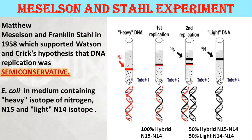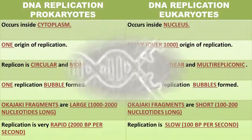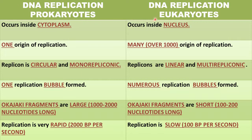Here is the difference between DNA replication in prokaryotes and eukaryotes. In prokaryotes, replication occurs inside the cytoplasm; in eukaryotes, it occurs inside the nucleus. In prokaryotes there is only one origin of replication, but in eukaryotes there are many origins — over a thousand replicons. A replicon is a unit of DNA in which replication starts from an origin and proceeds bi-directionally or unidirectionally to terminus sites. Replicons are circular and mono-repliconic in prokaryotes, and linear and multi-repliconic in eukaryotes.